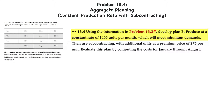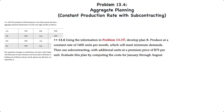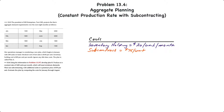In this case, we're going to use that information to develop a second plan, Plan B, and produce at a constant rate of 1,400 units per month to meet minimum demands. The company will use subcontracting with additional units at a premium price of $75 per unit. We're asked to evaluate this plan by computing the costs for January through August. Using subcontracting will prevent any need for either hiring or laying off workers, so we only have two applicable costs: the inventory holding cost at $20 per unit per month and subcontracting at $75 per unit.